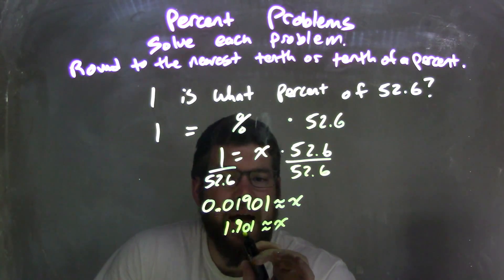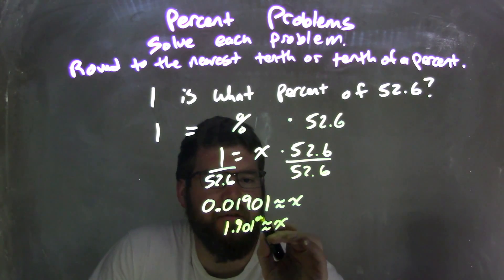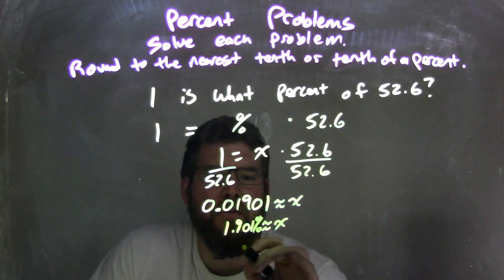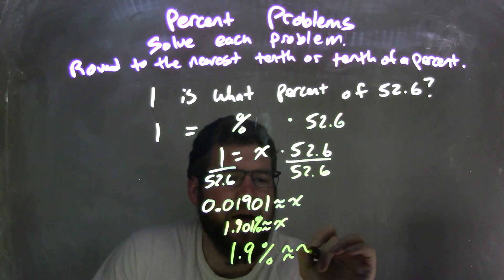We have 1.901 approximately equal to x. If I want to round that, I look at the 9 and then the 0. The 0 causes the 9 to stay the same, so we're left with 1.9% approximately equal to x.